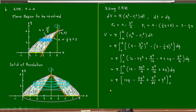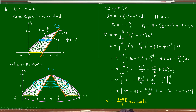Applying the upper limit at y equals 4: 48 minus 48 minus 1024 over 80 plus 16, with everything zero at the lower limit. Simplifying gives 144 pi over 5 cubic units as the volume of this solid.